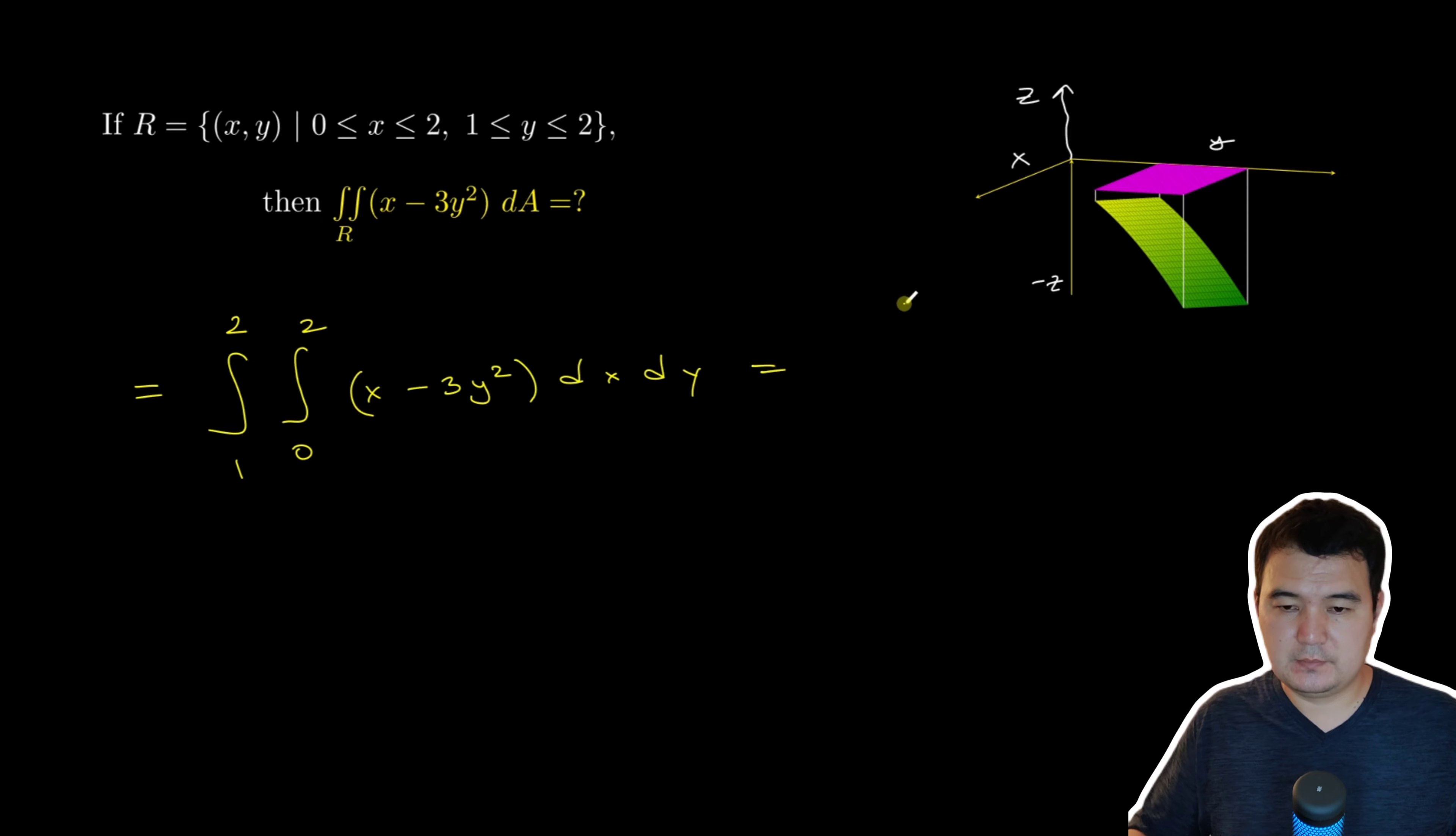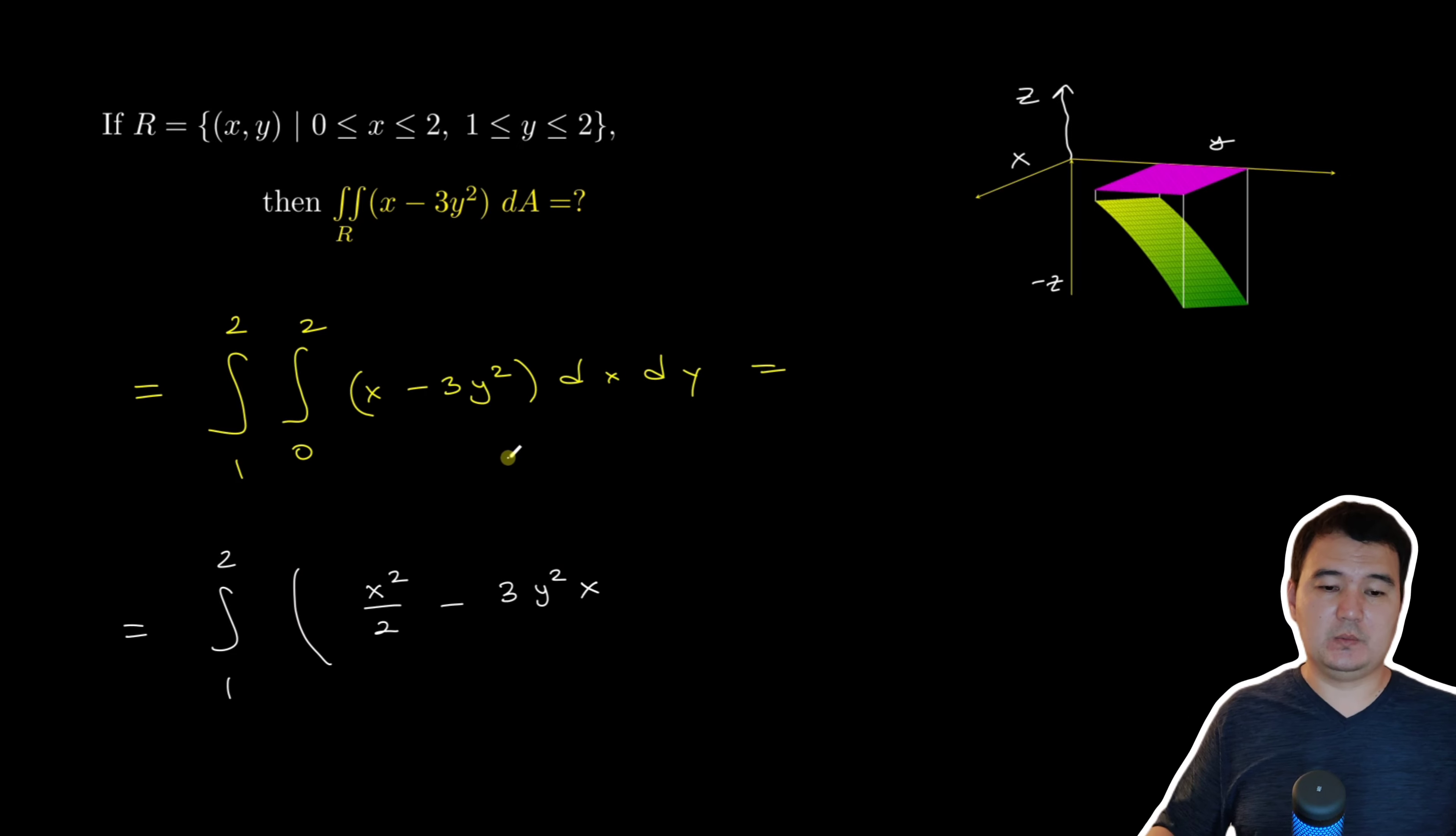So that means let's do the first integral. So the first integral with respect to x is going to be, so we are taking x squared over 2 minus 3y squared x. We are just treating these 3y squared as a constant number with respect to x. And this is from 0 to 2, and then dy.